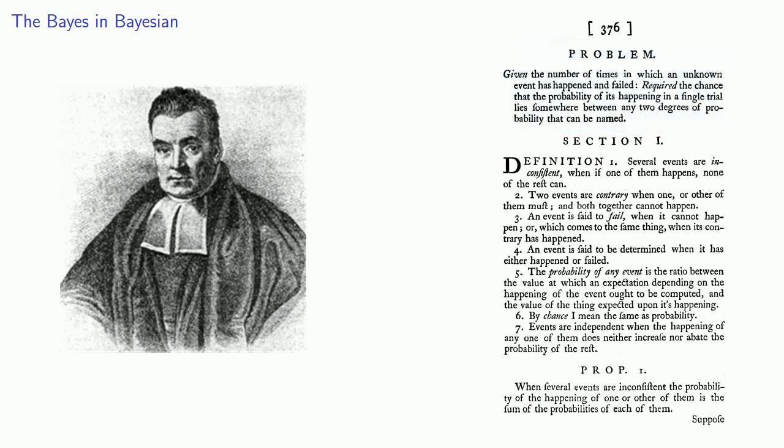There are two ways of interpreting probability. One of them, which is known as the Bayesian interpretation, concerns the probability of an event on the next time that a random experiment is run. It's called Bayesian after Thomas Bayes.